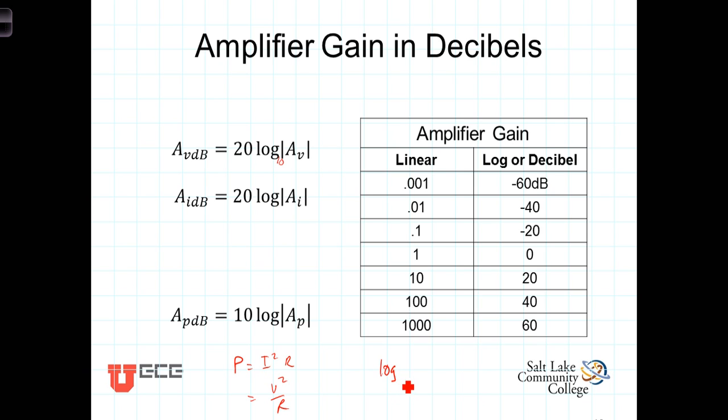When you take the log, log base 10 of I squared, or V squared, this exponent gets kicked out in front, and you get two times the log base 10 of I. So when we're talking about power, there's this factor of two that we don't have when we're talking about either voltage or current. Thus, when we're talking about power gain in dB, we define it as 10 times the log of the linear gain.